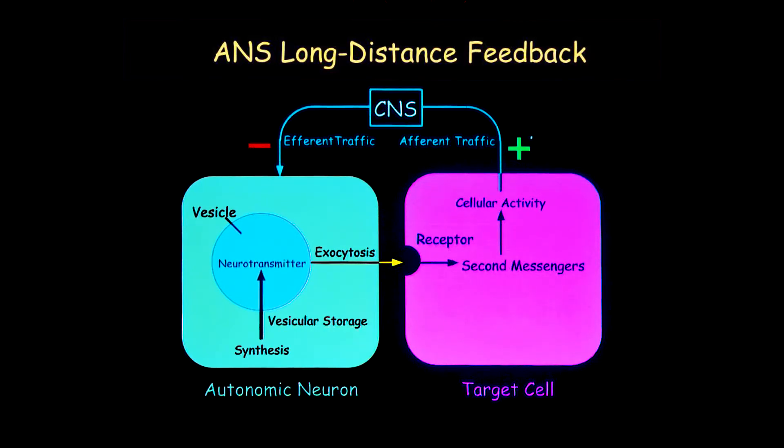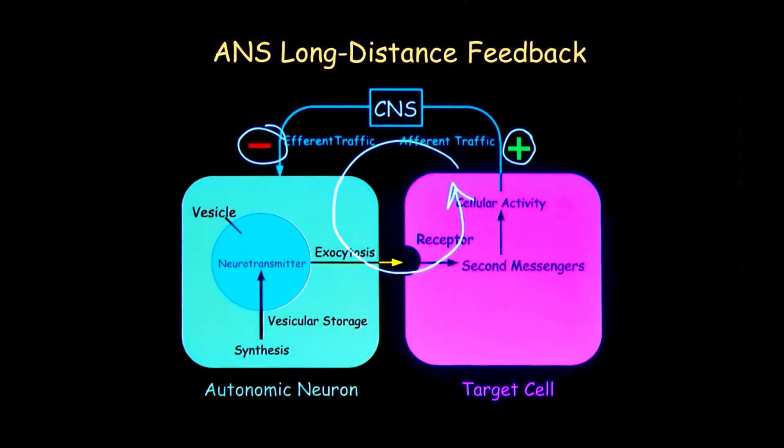Negative feedback just means here's a positive effect, here's a negative effect. Anytime you've got a cycle like this where there's an odd number of negative signs, it's a negative feedback loop. The level of the monitored variable, let's just say blood pressure, is going to be held stable.